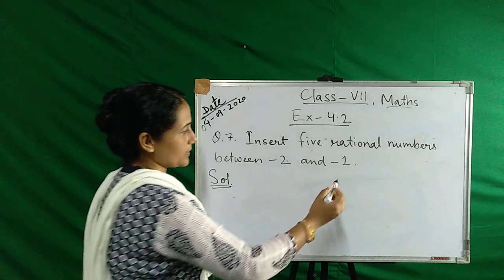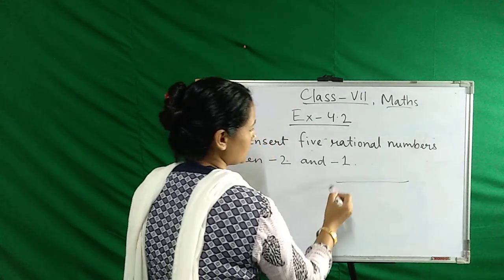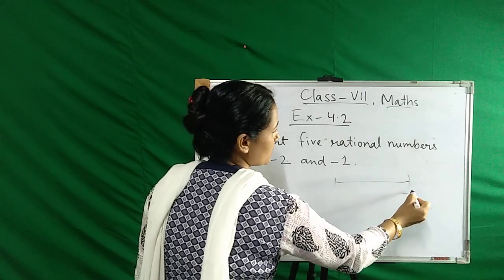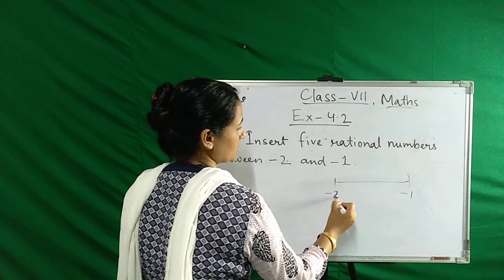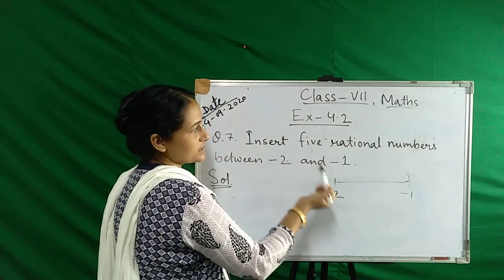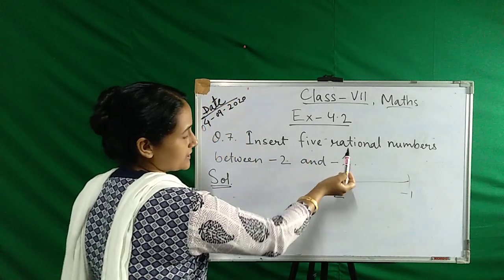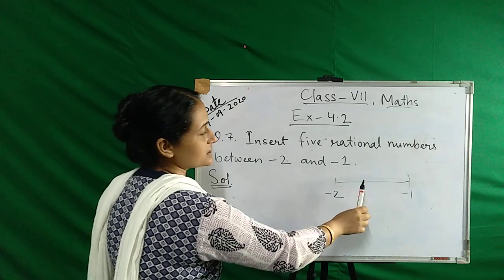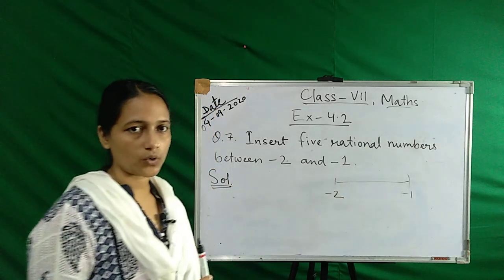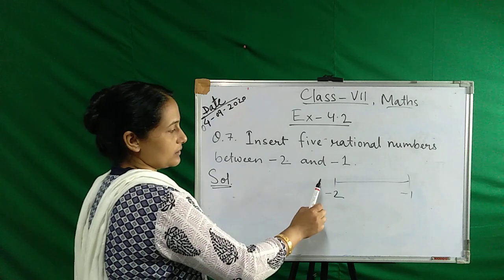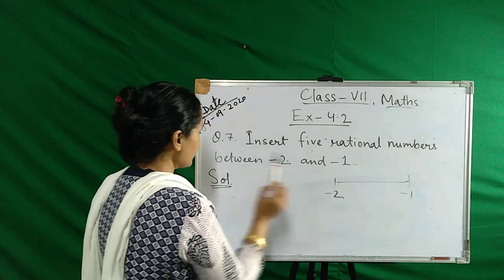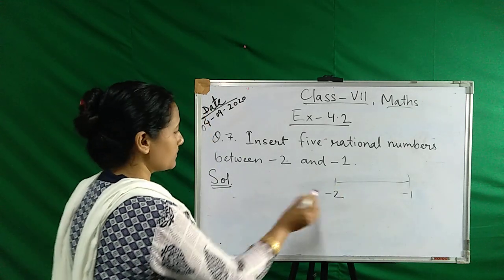See, we draw a number line. Here is minus 1 and minus 2. So to find five rational numbers, we will do six divisions. Okay, so we do six divisions. To do six divisions, we take minus 2 first.